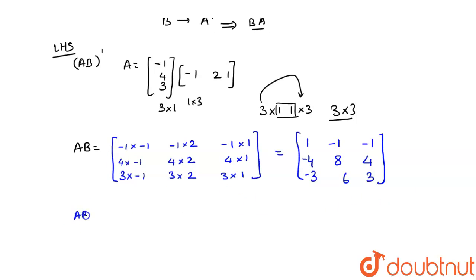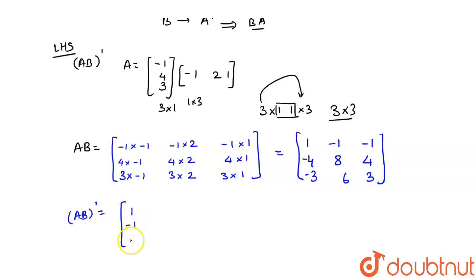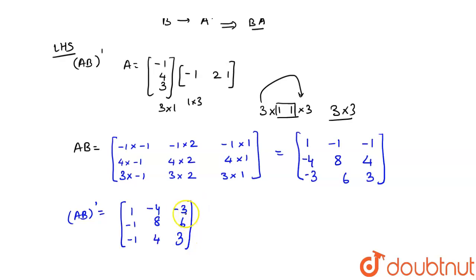So let's find the transpose of this. (AB)ᵀ will be equal to — interchange the rows and columns. So this would be: [1, -4, -3], [-2, 8, 6], [-1, 4, 3]. So this becomes my (AB)ᵀ.